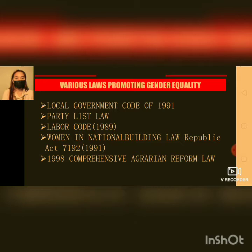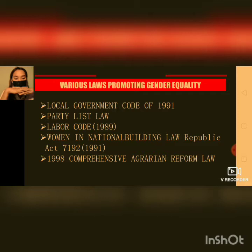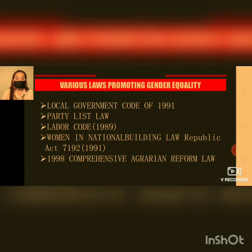The second law is the Women in Nation Building Law, Republic Act 7192 of 1991. It is an act promoting the integration of women as full and equal partners of men in development and nation building. The law provides that a substantial portion of government resources be utilized to support programs and activities for women.